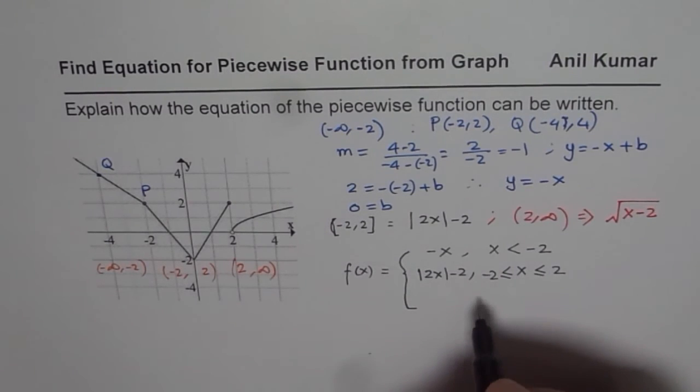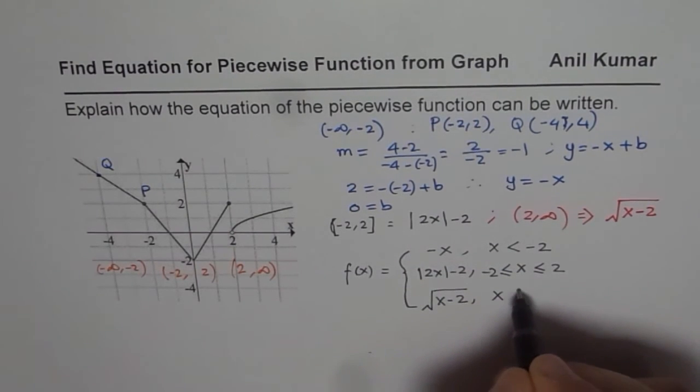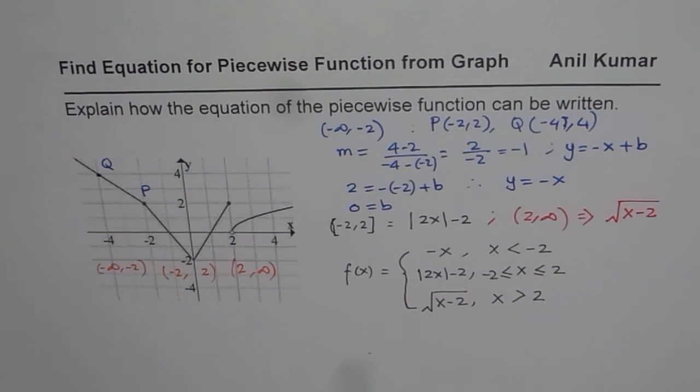And the third piece is the square root function. So we'll write this as square root of x minus 2, when x is greater than 2. So that is how you can write equation for this particular piecewise function.